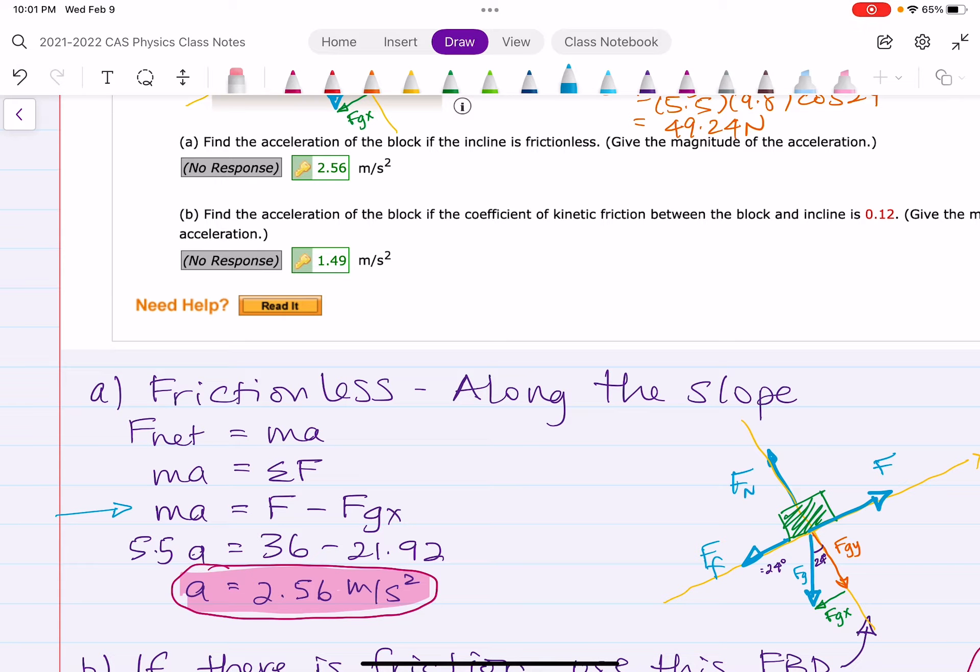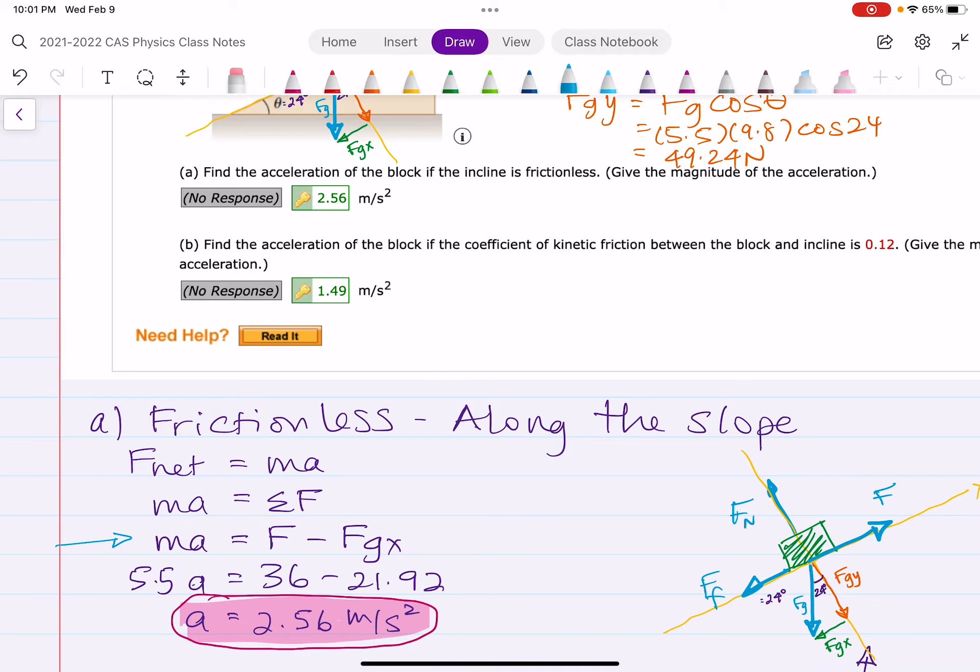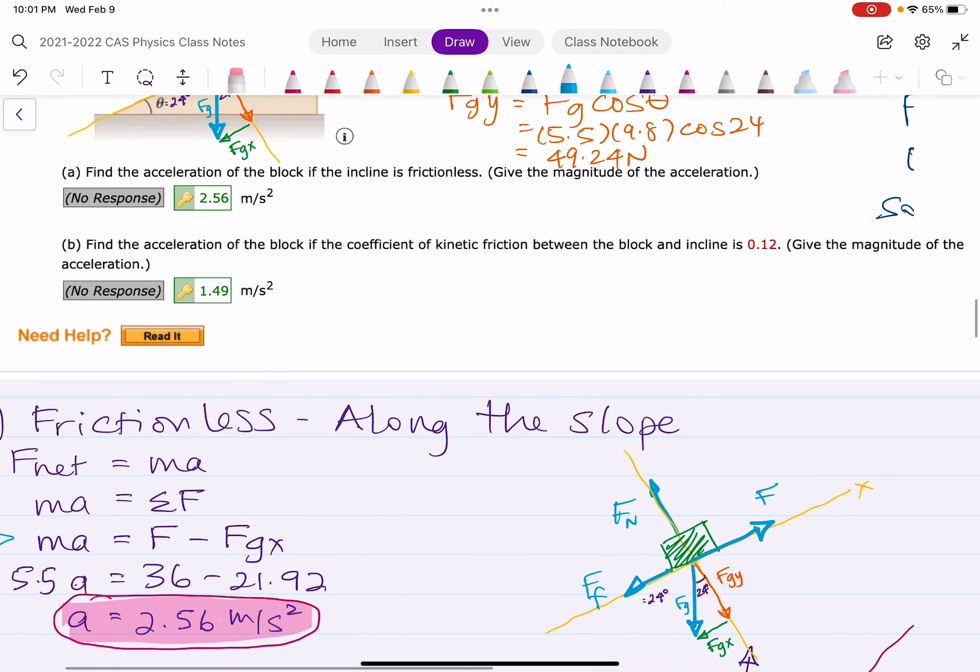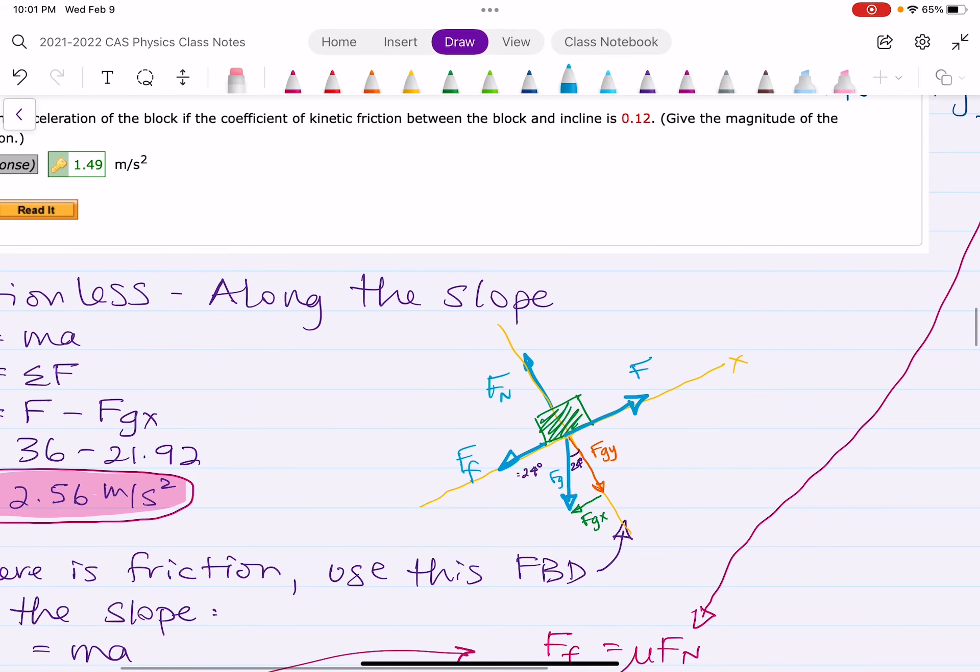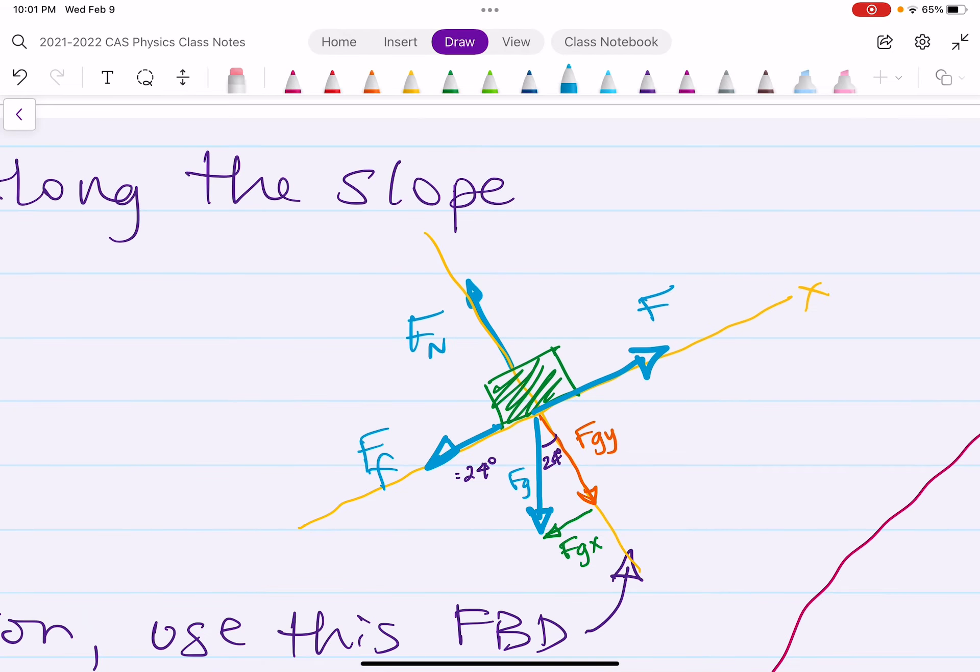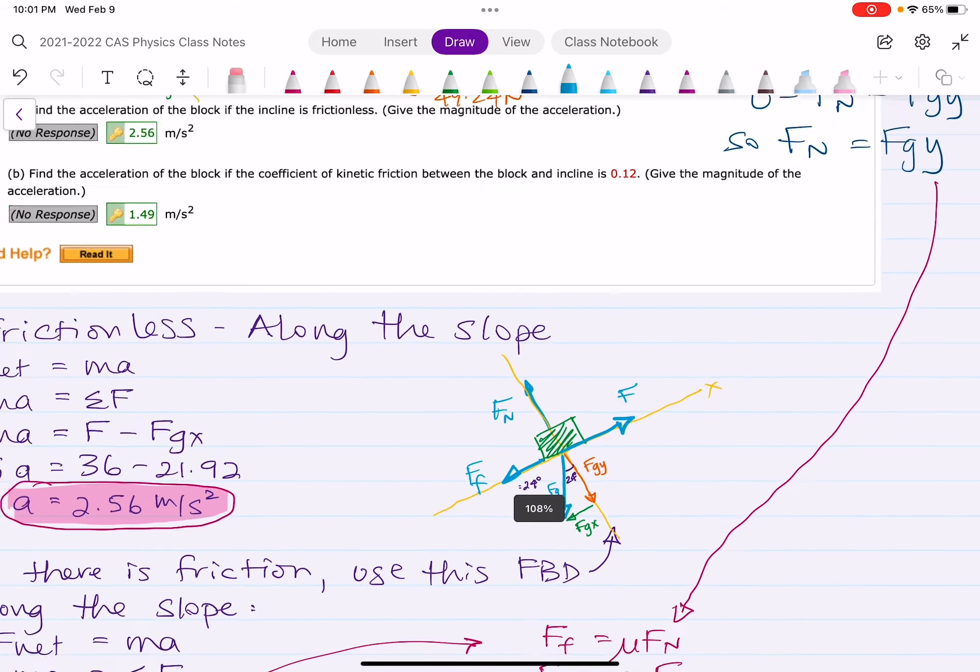In part B, we do have to consider kinetic friction. So this is the new free body diagram. Again, the same triangle with FGY and FGX adding up to give FG. So we're going to use this triangle.